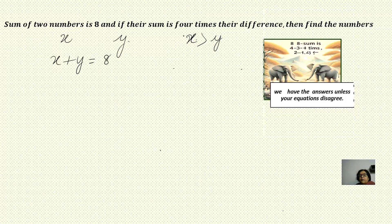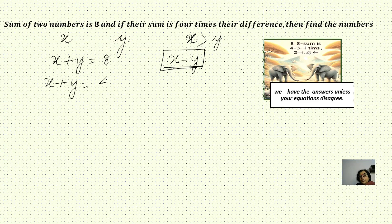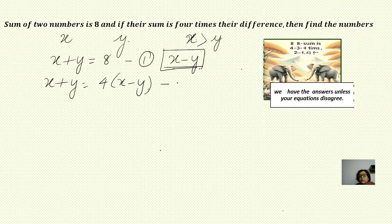The second part says if the sum is four times the difference. When we write the difference it will be x minus y, since we have taken x is greater than y. You can take y is greater than x — there is no hard and fast rule. The question says x plus y is four times x minus y. So you get two equations. The first one is simple; the second one we can simplify further.